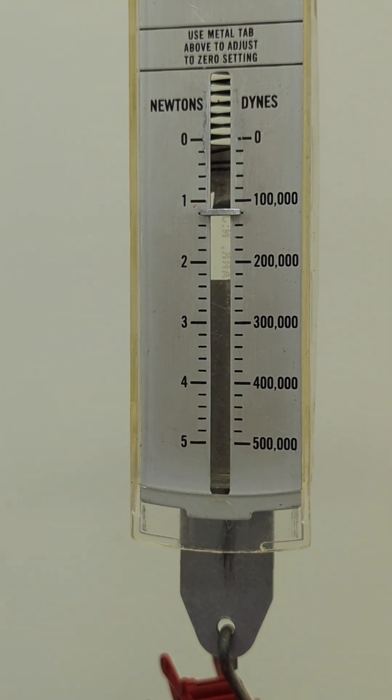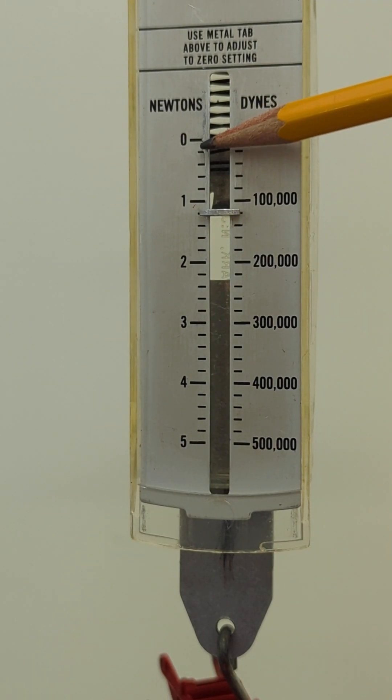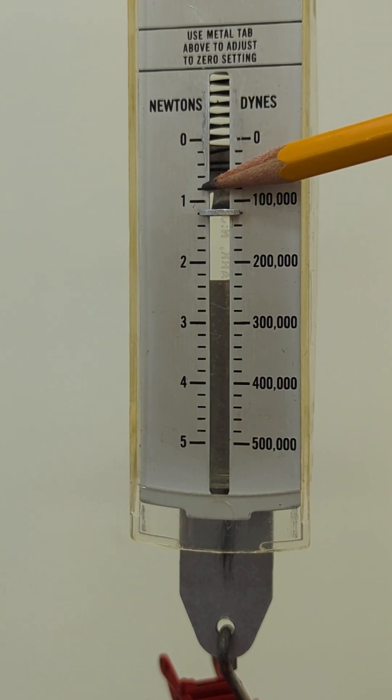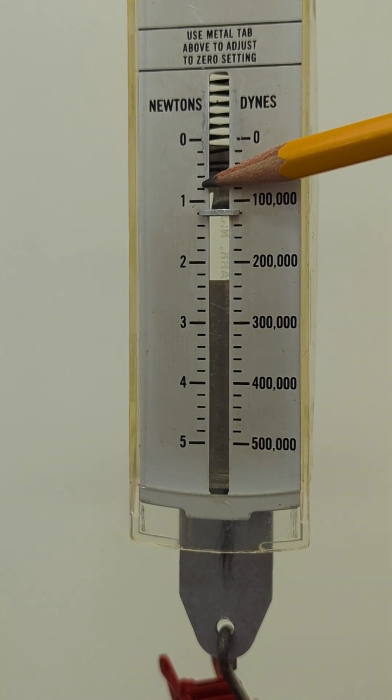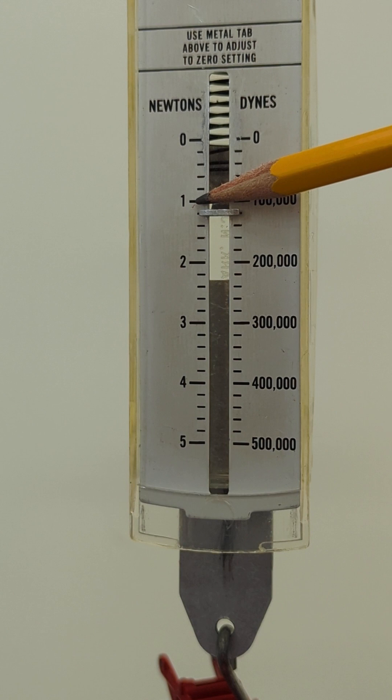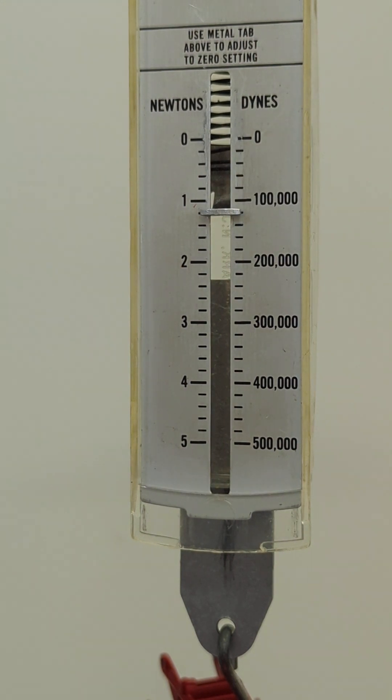It's important not to count the lines in between because notice there's only one, two, three, four lines. If you're starting from here this is the end of the first space, end of the second, end of the third, end of the fourth. You have to go all the way to the end of the fifth line to get to the number one.